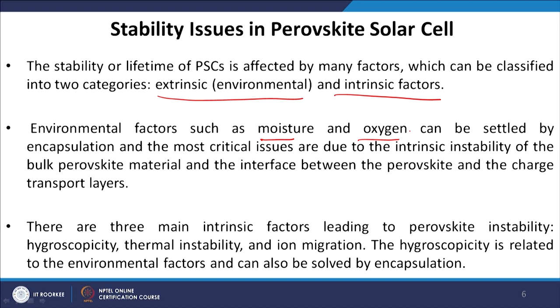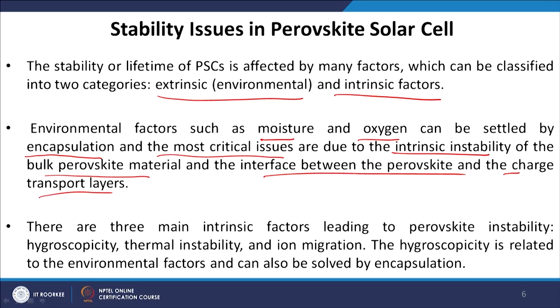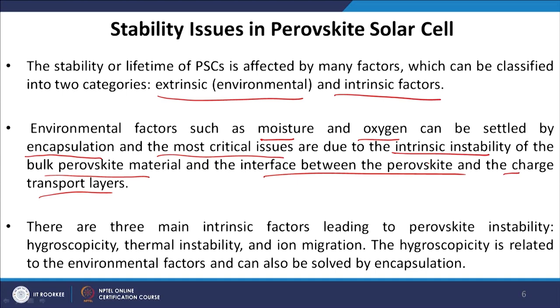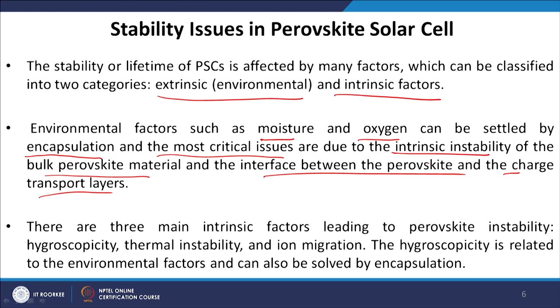Environmental factors such as moisture and oxygen can be settled by encapsulation — most of the cost in solar cell technology goes toward encapsulation or making barrier layers. The most critical issues are due to the intrinsic instability of the bulk perovskite material and the interface between perovskite and the charge transport layer. There are three main intrinsic factors leading to perovskite instability: hygroscopicity, thermal instability, and ion migration.